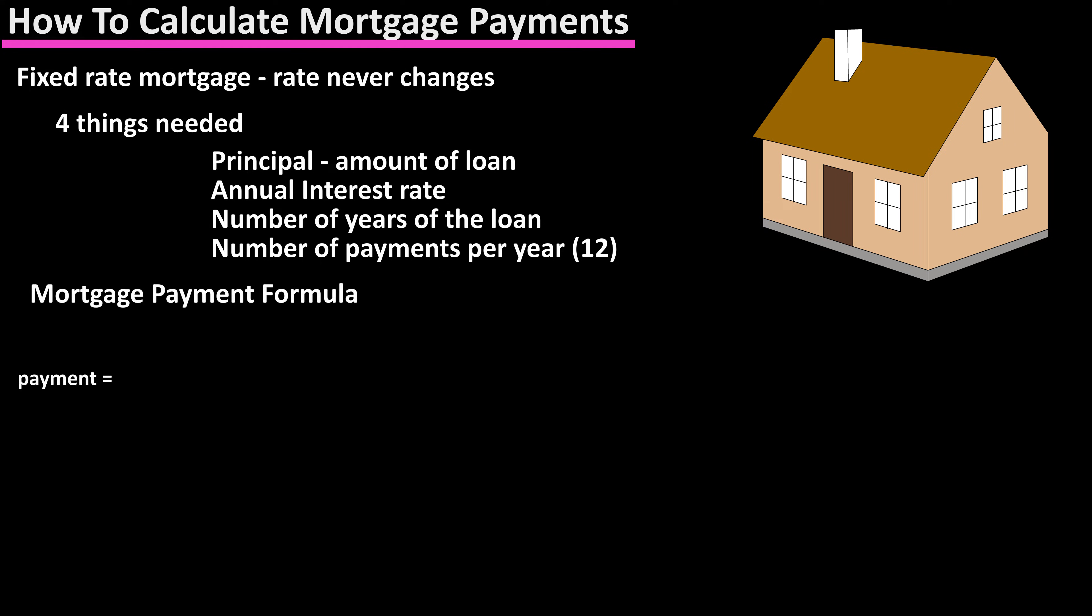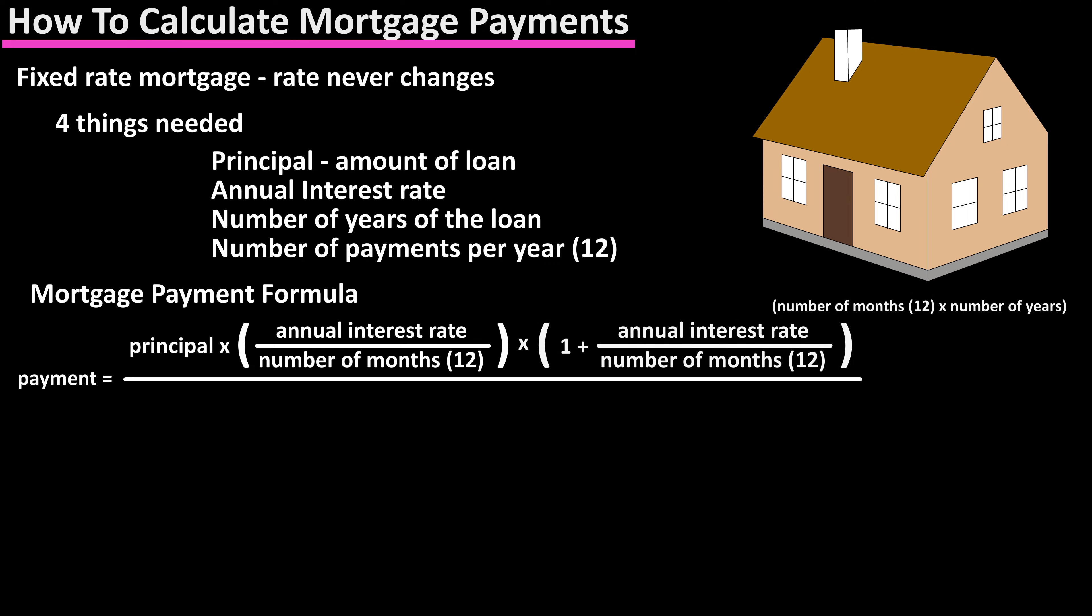The formula for calculating the mortgage payment is the principal times the quantity annual percentage rate divided by the number of months in a year, times the quantity one plus annual percentage rate divided by the number of months in a year, with this quantity raised to the number of months times the total number of years of the loan, divided by the quantity one plus the annual percentage rate divided by the number of months in a year, raised to the number of months times the number of years, minus one.